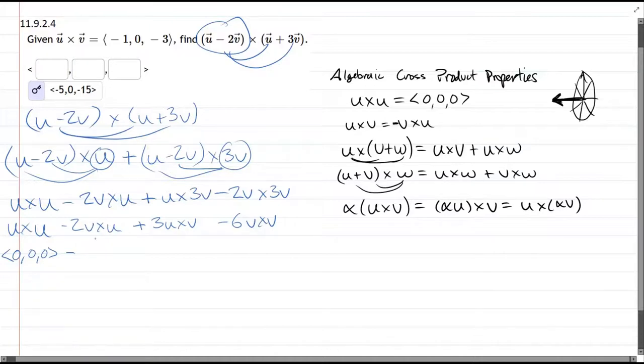So what do we do with this v cross u? Well, we know we have u cross v. So that means v cross u is negative of what we see here. So it's positive 1, 0, positive 3. Plus 3.